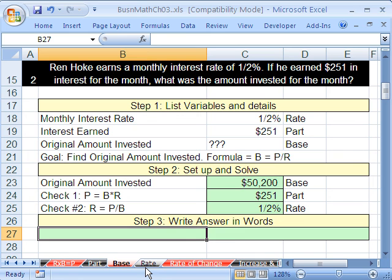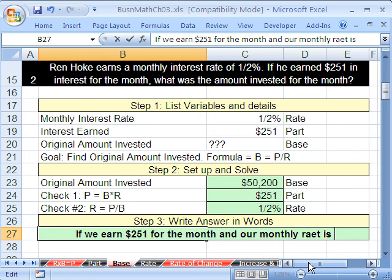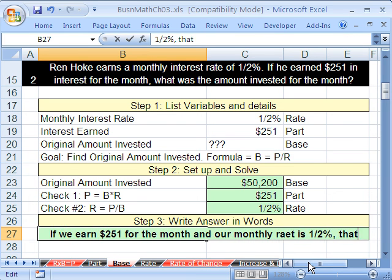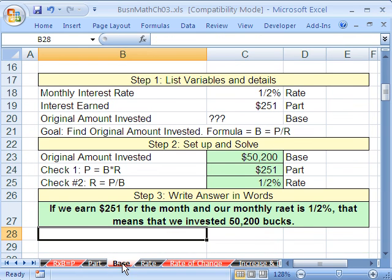Let's write our answer. If we earn $251 interest for the month, and our monthly rate is 1/2%, that means that we invested $50,200. So there it is. That's problem number two for base. When we come back, we'll see how to solve for rate.